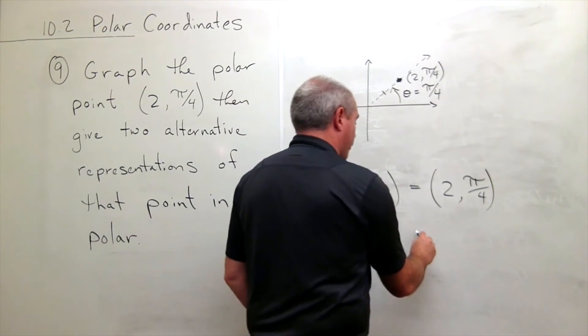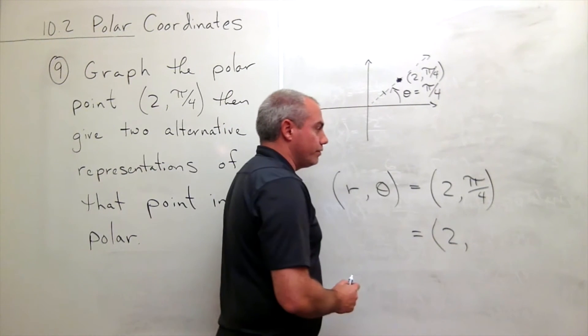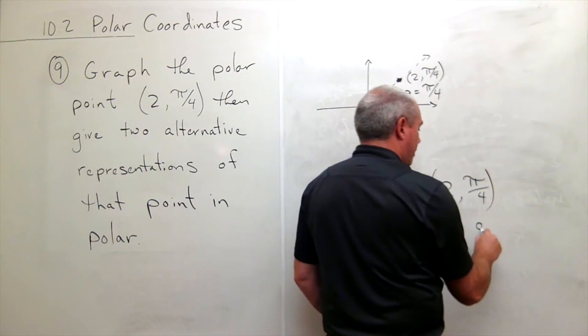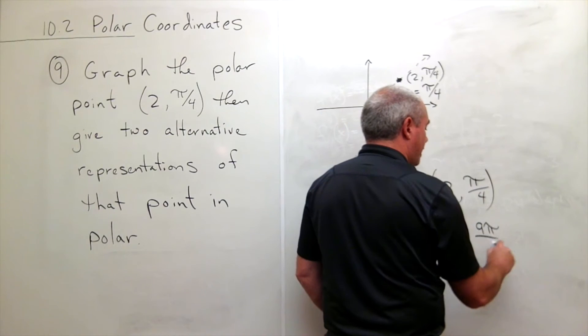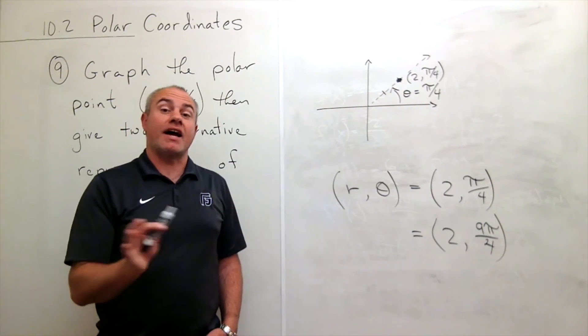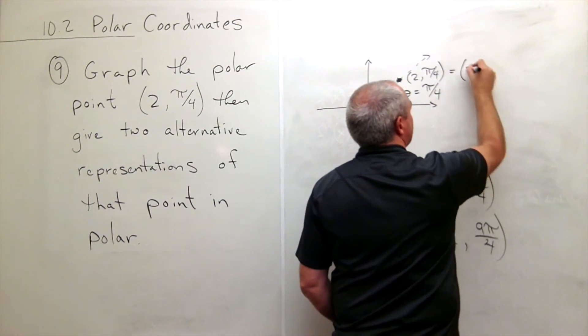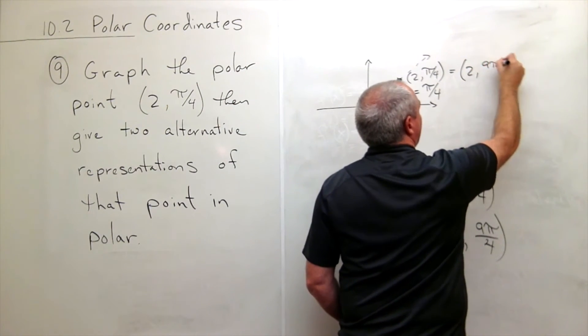So another way that I could write this exact same point is I could say I go out 2 units on the angle 9π/4. That's the exact same polar point. So this is the same as (2, 9π/4).